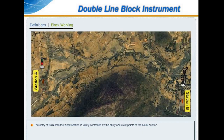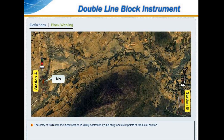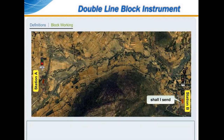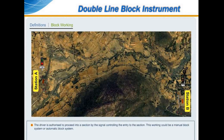The entry of a train onto the block section is jointly controlled by the entry and exit points of the block section. The driver is authorized to proceed into a section by the signal controlling the entry into the section.